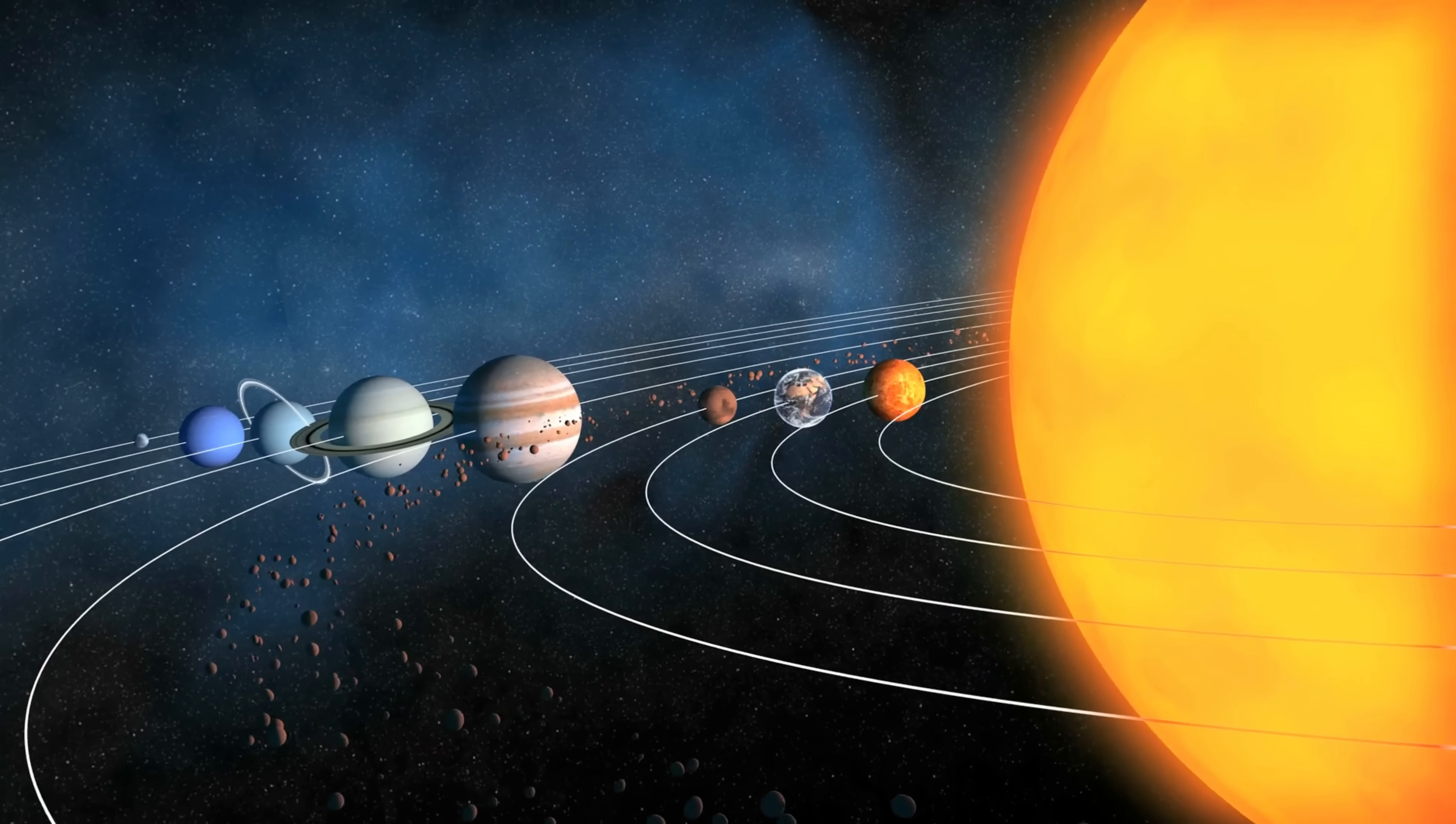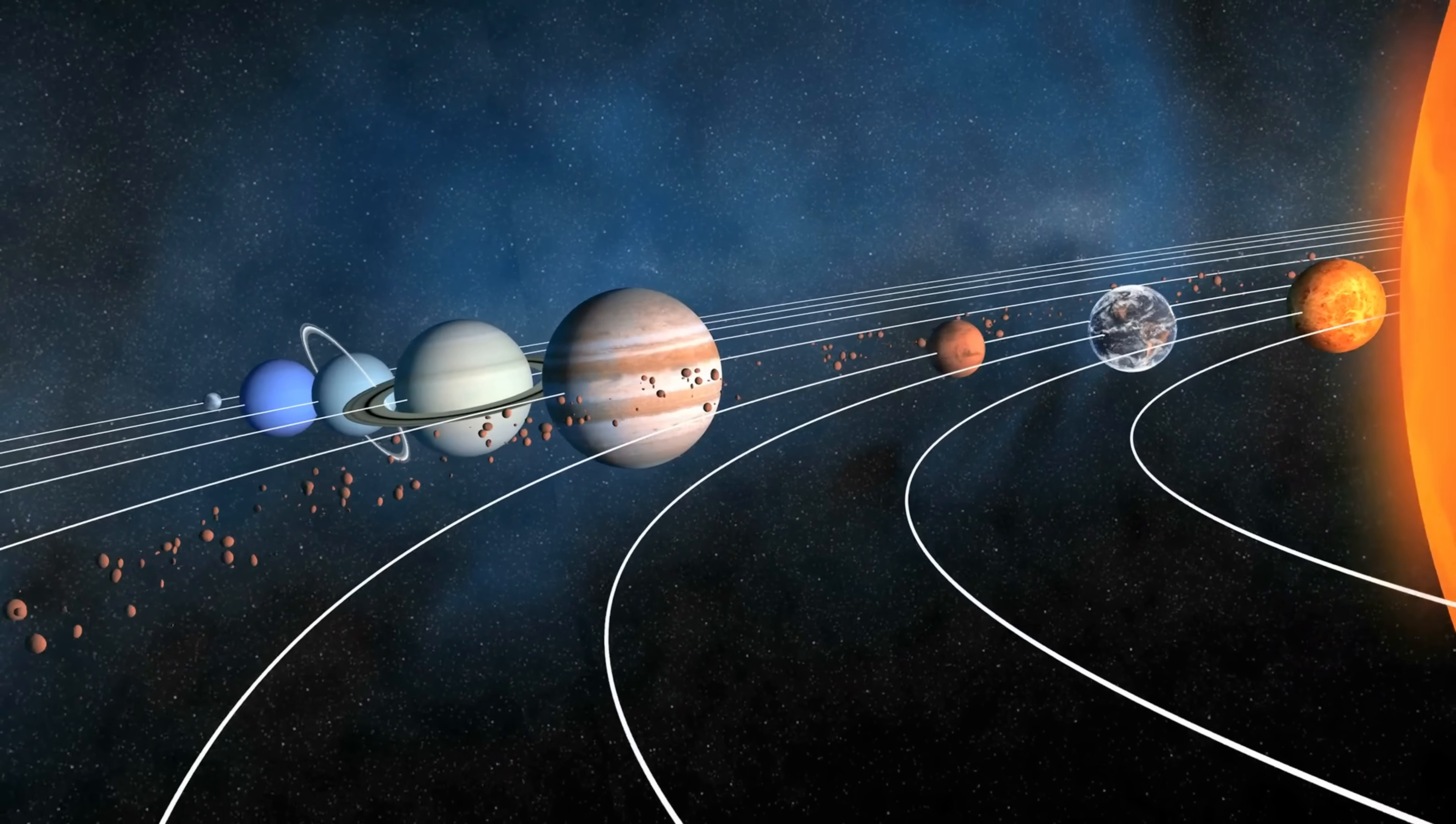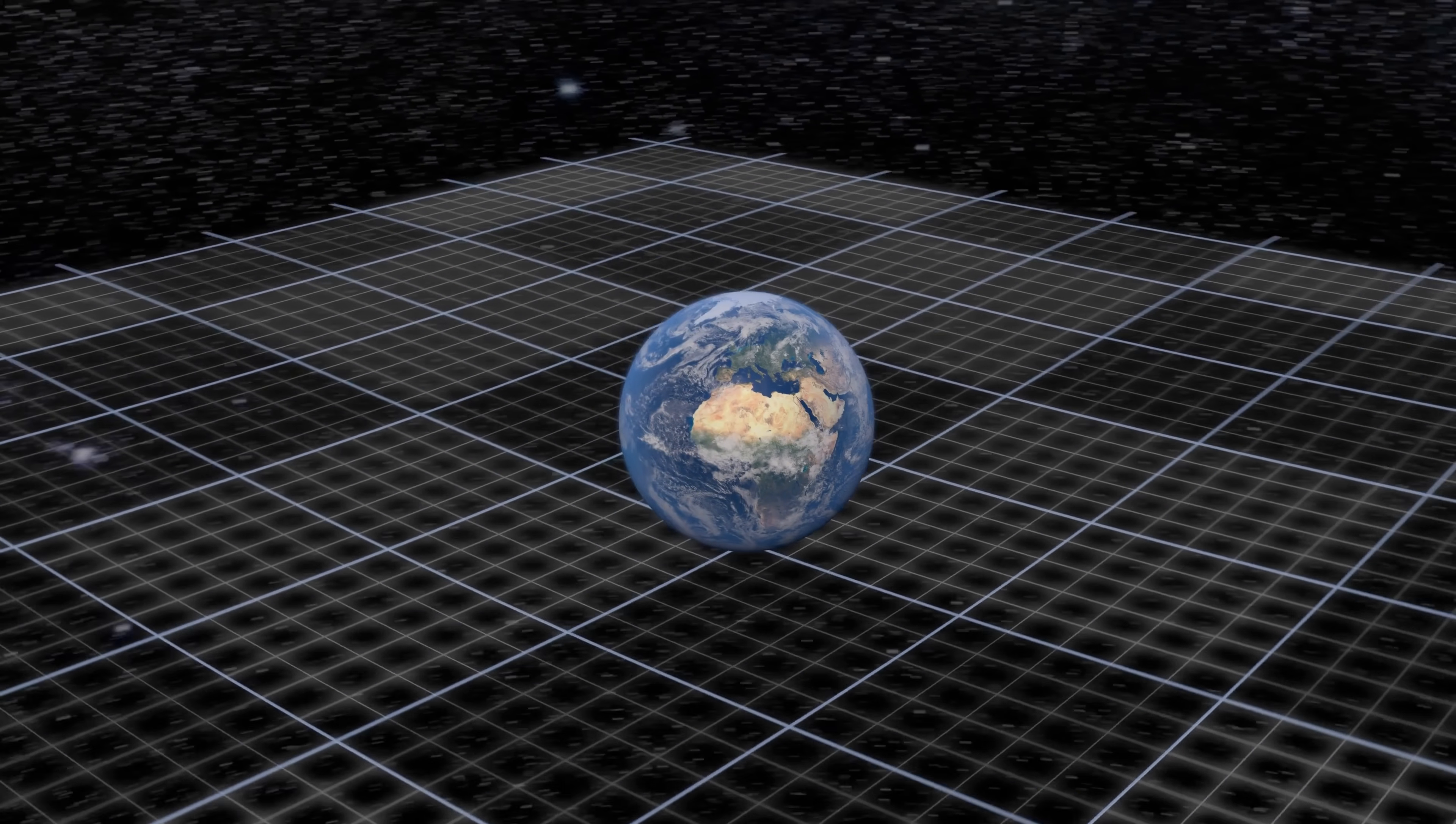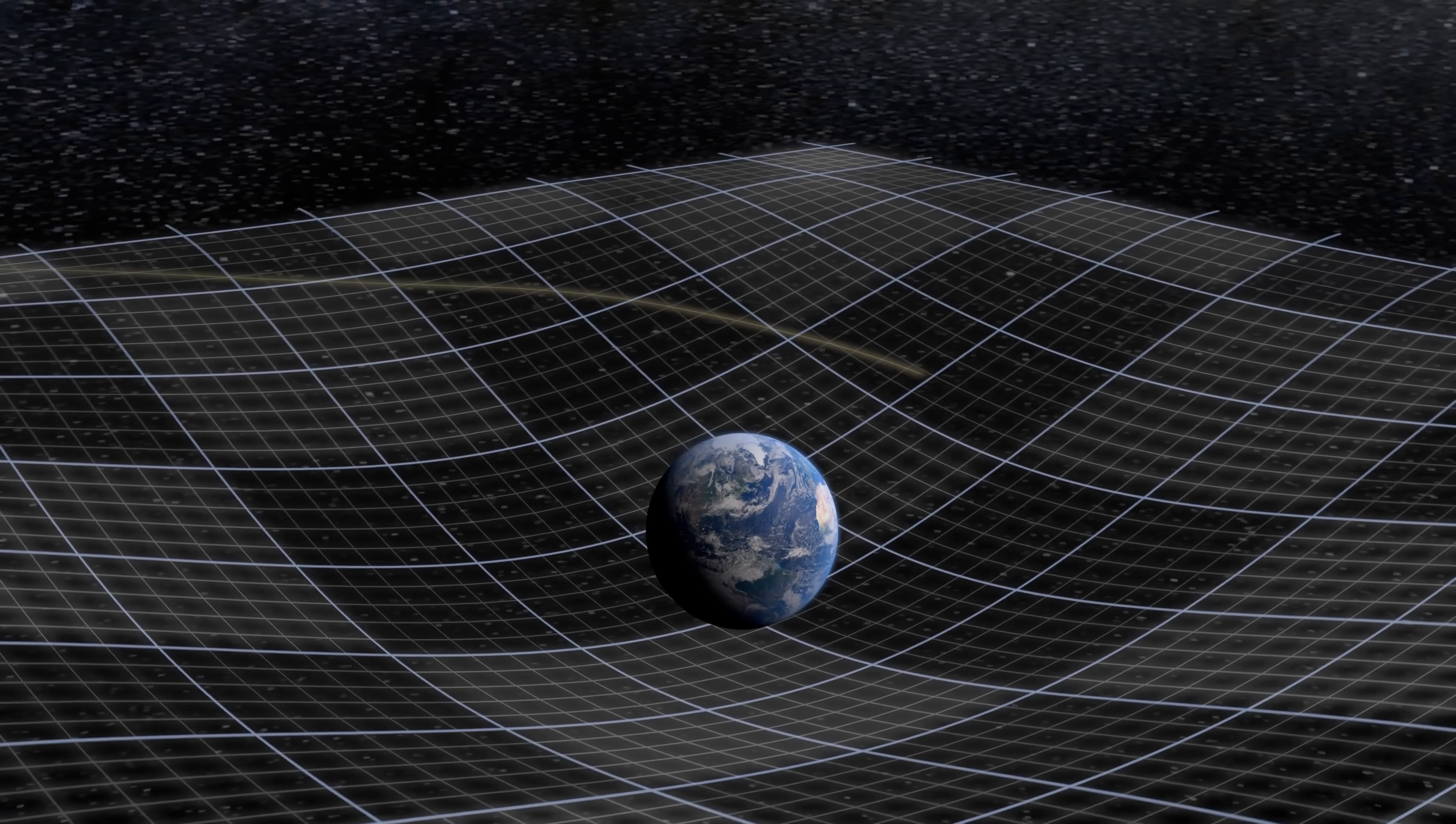A theory that didn't just describe how gravity works, but redefined what gravity actually is. Of course, it's important to mention, the rubber sheet example is just a two-dimensional visualization. It's a helpful way to picture how mass can bend space.